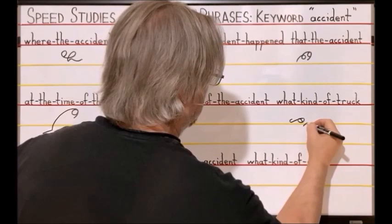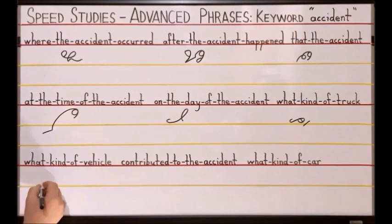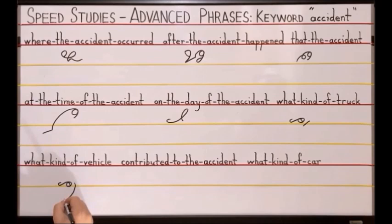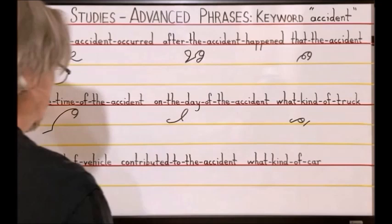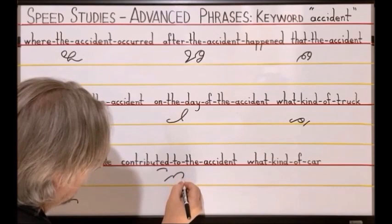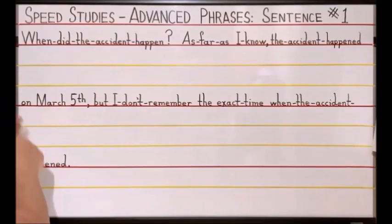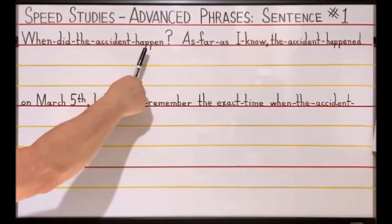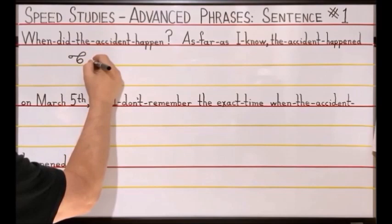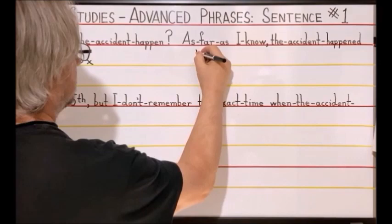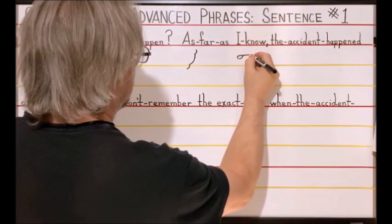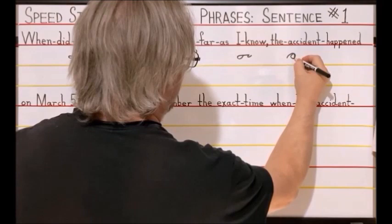What kind of truck is O-K-Long-I in a disjoint T. What kind of vehicle is O-K-Long-I in a disjoint V-E-disjoint K. Contributed to the accident is a K above the line T-U-T-H-A-S. And finally, what kind of car is O-K-Long-I in a disjoint K-R. When did the accident happen is E-N-A-S-A with an X for the question mark. As far as S-F-S-I-K-O-A-N-O, the accident happened is T-H-A-S-A.